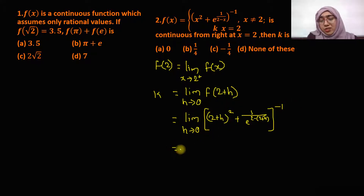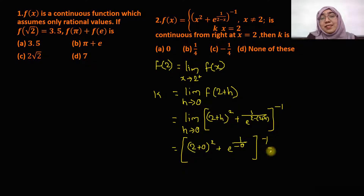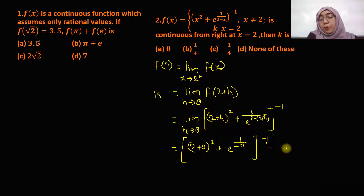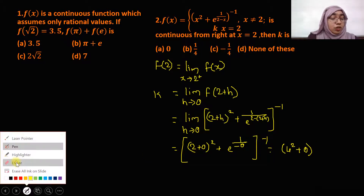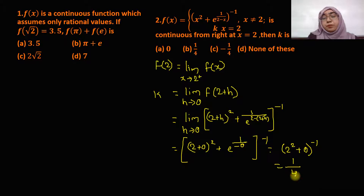Just put h equal to 0. Then you get 2 plus 0 whole squared, plus e raised to 1 upon minus 0, raised to minus 1. e raised to minus infinity — anything raised to minus infinity is 0. So you get 2 squared plus 0, the whole raised to minus 1, which gives you the answer 1 by 4. So k equals 1 by 4.